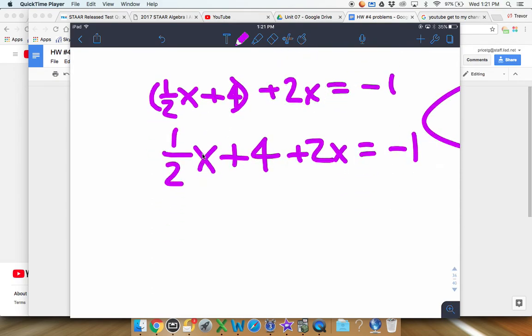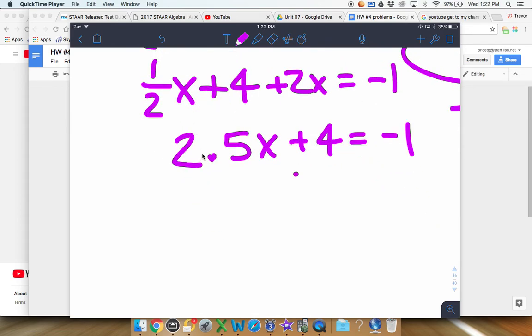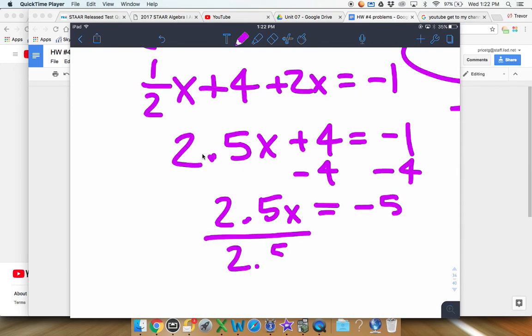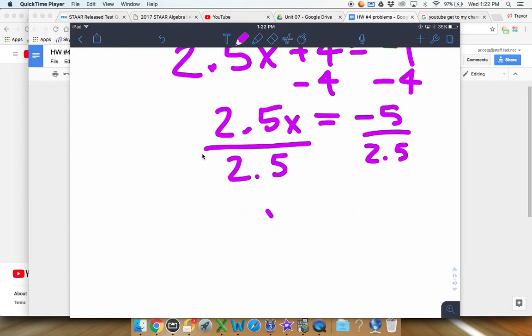Since we don't have anything to distribute, we don't need our parentheses anymore. And then I guess we can combine our like terms. So you got two and a half right there, so I'm going to just write that as 2.5x, and then plus 4 equals negative 1. And after that, I guess we'll get the x by itself. We need to subtract 4. That's 2.5x equals negative 5. And then we need to finally divide after that. Divide by 2.5. I think that's going to go in negative 2 times.